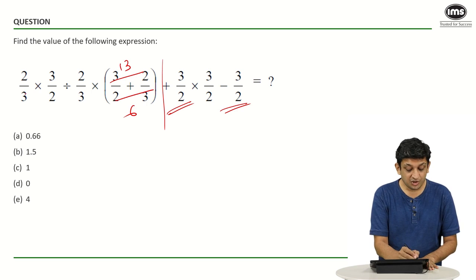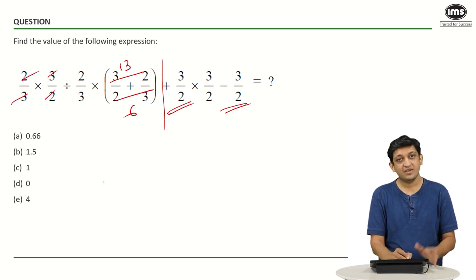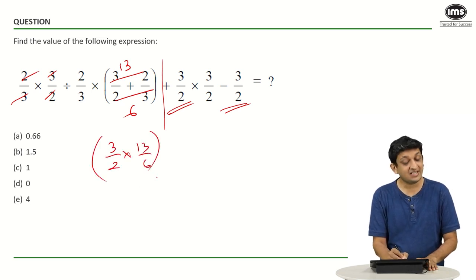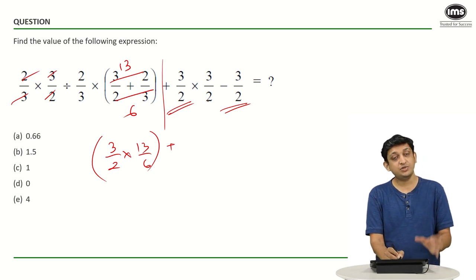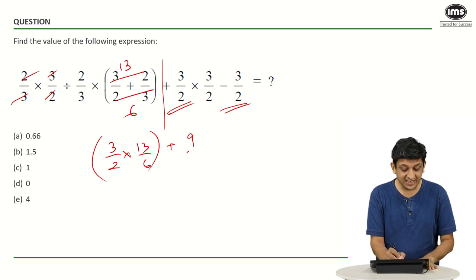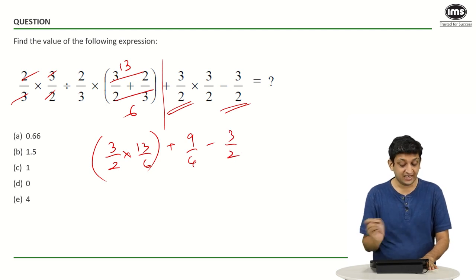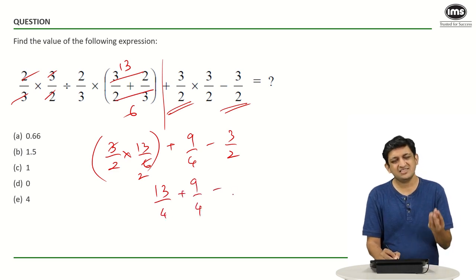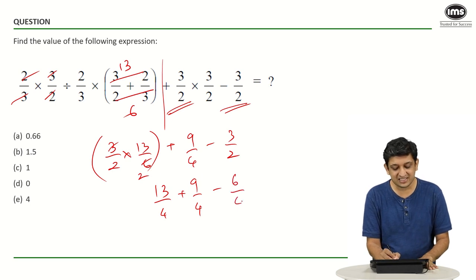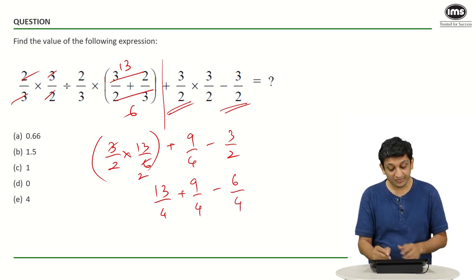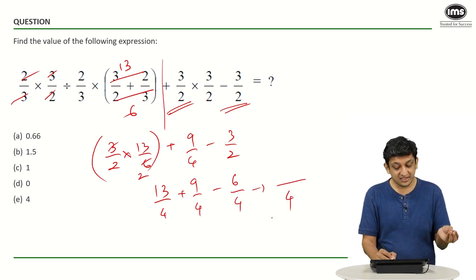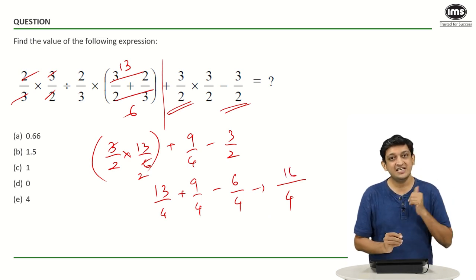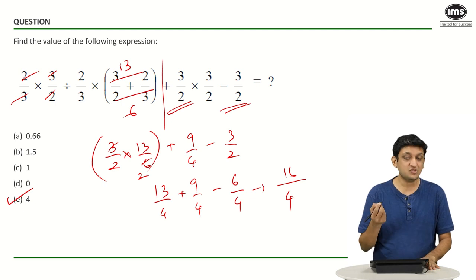The only plus or minus parts are 3/2 into 3/2 and minus 3/2, so we handle those later. On the left side, 2/3 into 3/2 is simply 1. Then 1 divided by 2/3 becomes 3/2, multiplied by 13/6. Plus, 3/2 into 3/2 gives 9/4, minus 3/2. Now: 3 twos are 6, giving 13/4 plus 9/4 minus 3/2. Writing 3/2 as 6/4 to unify denominators: 13 plus 9 is 22, minus 6 is 16. 16 divided by 4 is 4. The correct answer is option E, 4.